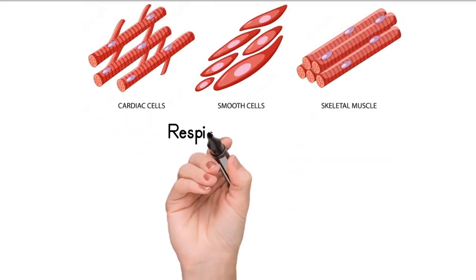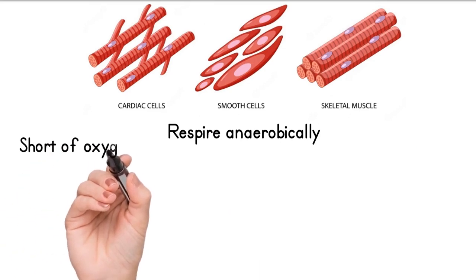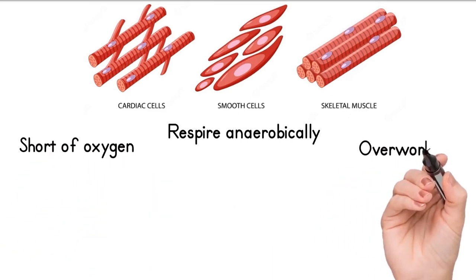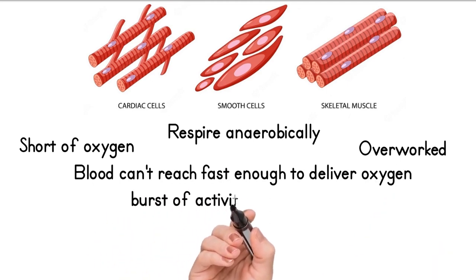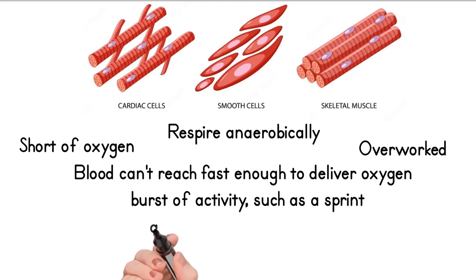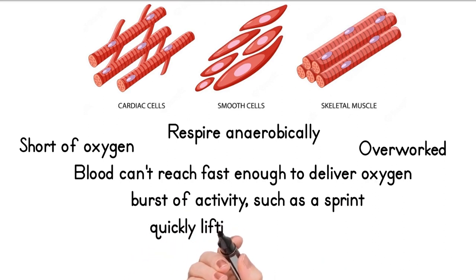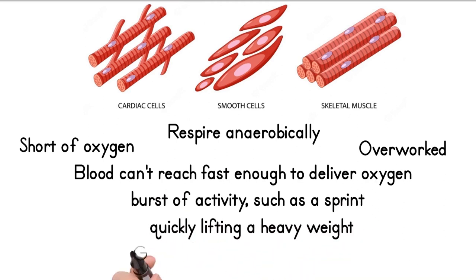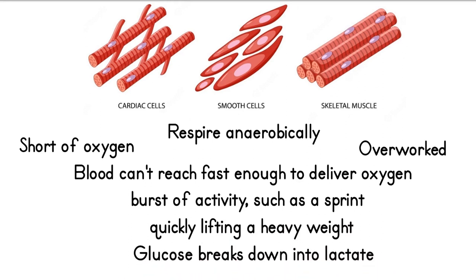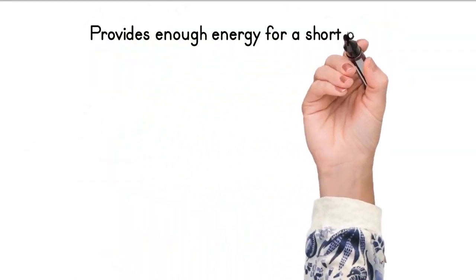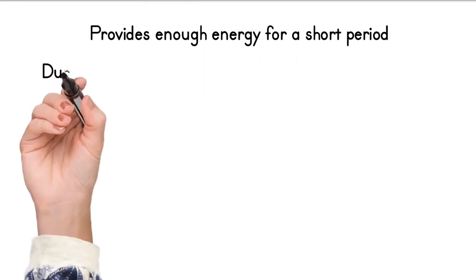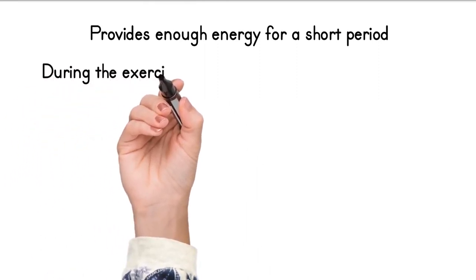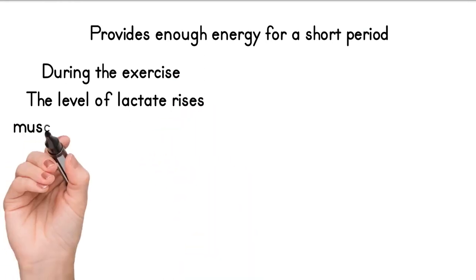Muscle cells can also respire anaerobically when they are short of oxygen. If muscles are overworked, the blood cannot reach them fast enough to deliver enough oxygen for aerobic respiration. This happens when a person does a burst of activity such as a sprint or quickly lifting a heavy weight. In this case, the glucose is broken down into a substance called lactate. Anaerobic respiration provides enough energy to keep the overworked muscles going for a short period. During the exercise, the level of lactate rises in the muscle cells and bloodstream.